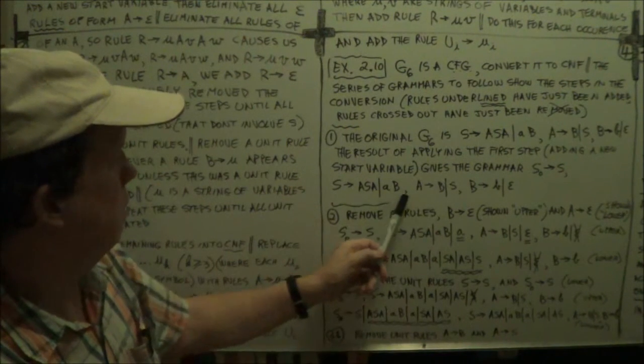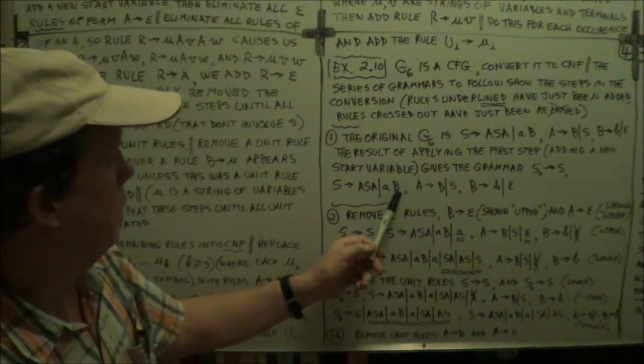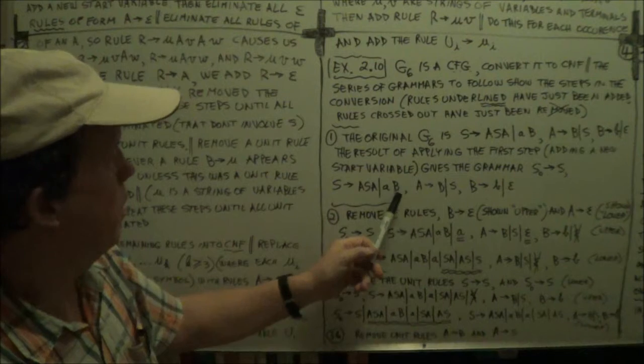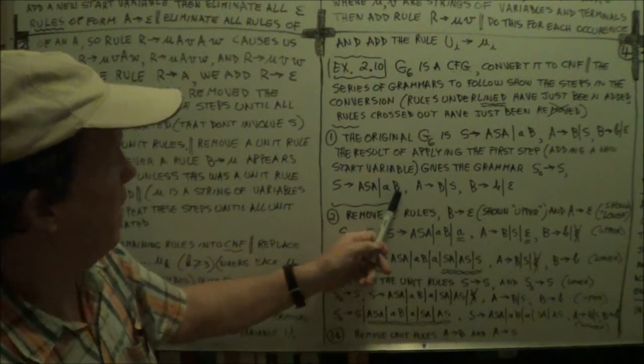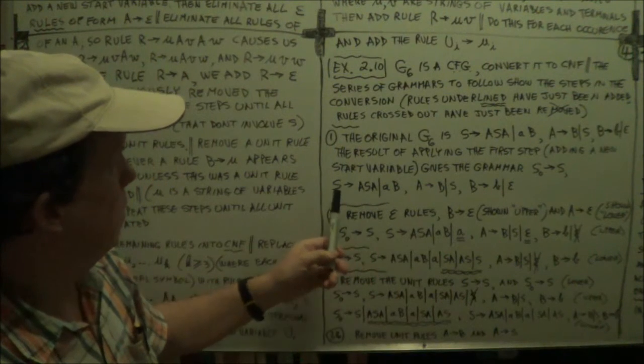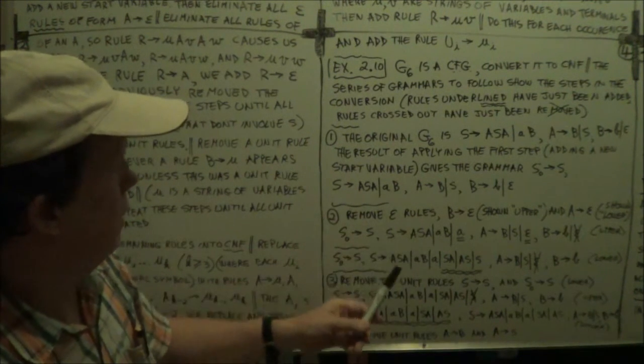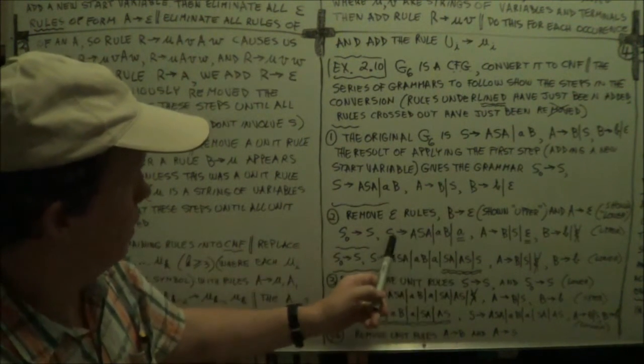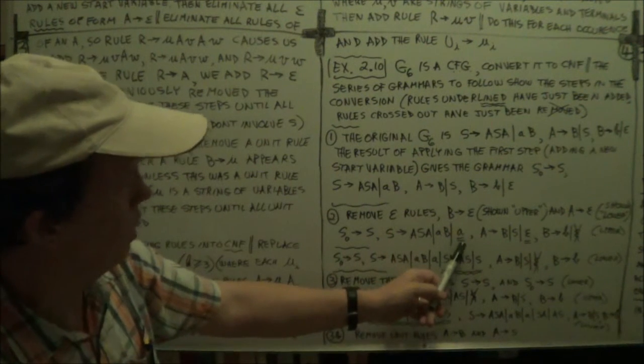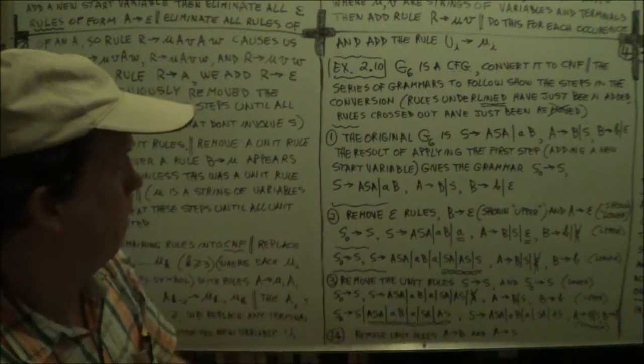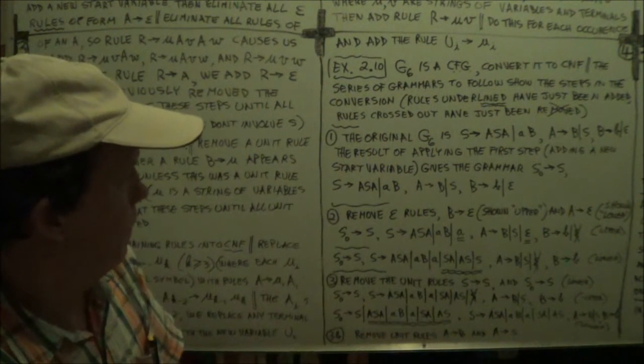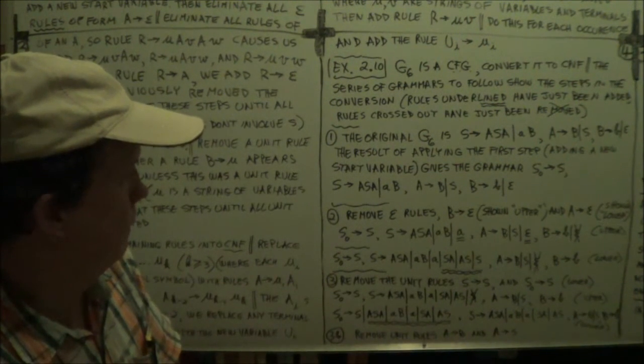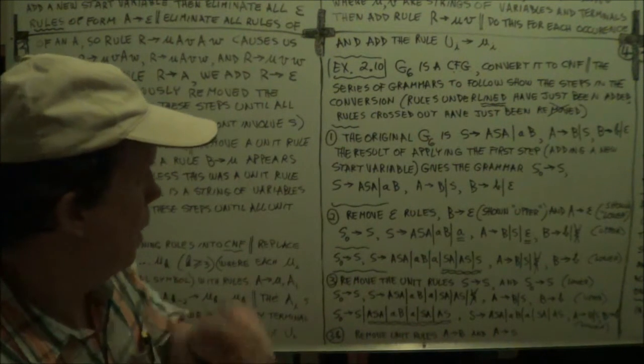So you just keep looping till you've got rid of all the epsilon rules. Right? Now, here, you know, you can't do anything. Oh, wait a minute. Here's a B. Okay. So, you eliminate that. So then you'd have A epsilon, which is just A. Right? So you'll add a rule S arrow A. So you've added that rule. S arrow A. There it is there. Double lined, underlined, double. Okay? So that one. Um...